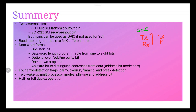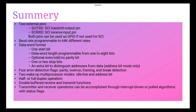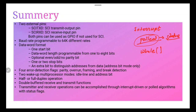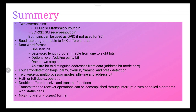Operation can be half-duplex or full-duplex depending on the mode — either using SCI as a transmitter only, a receiver only, or both transmitting and receiving. Double-buffered receive and transmit functions mean transmit and receiver operations can be accomplished through interrupt-driven or polled algorithms with a status flag. In the polled algorithm, you continuously read the status bit in a while loop, and whenever the SCI status changes, you read data from the RX buffer. The SCI also uses non-return-to-zero format and has a 16-level transmit/receive FIFO.